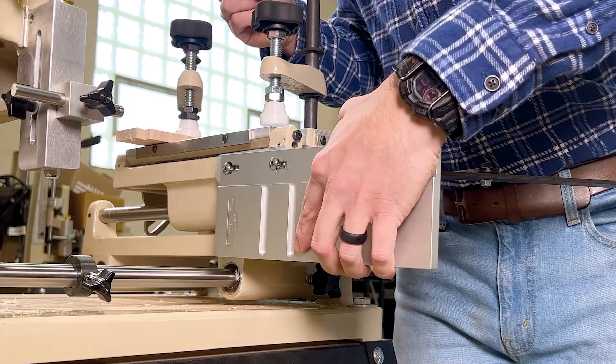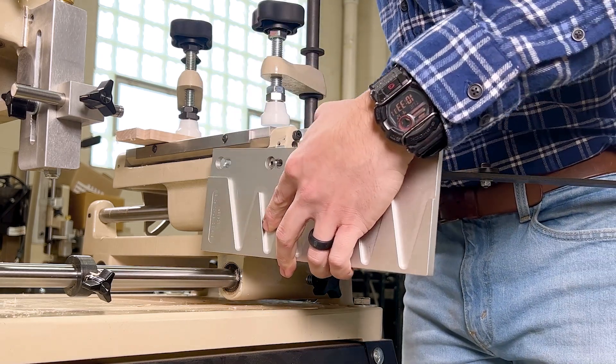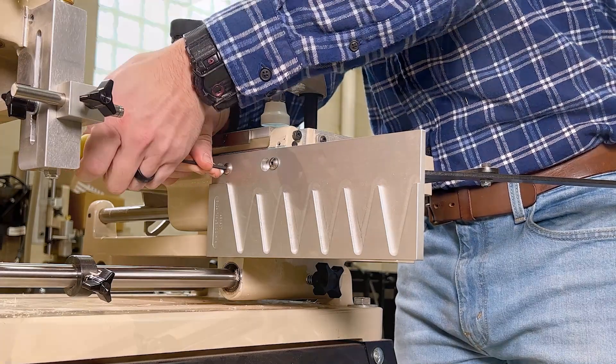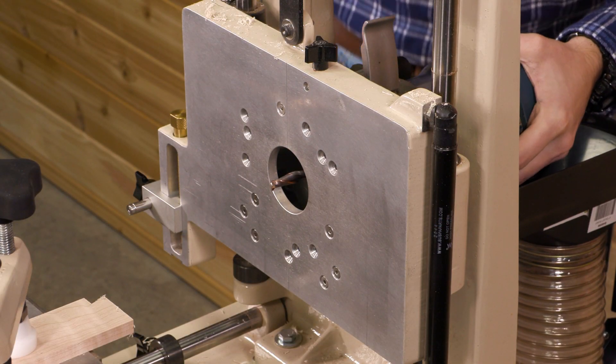Once you've cut the tails on the scrap piece, switch to the pin template on the multi-router and change the router bit to a ⅜ inch spiral upcut bit.